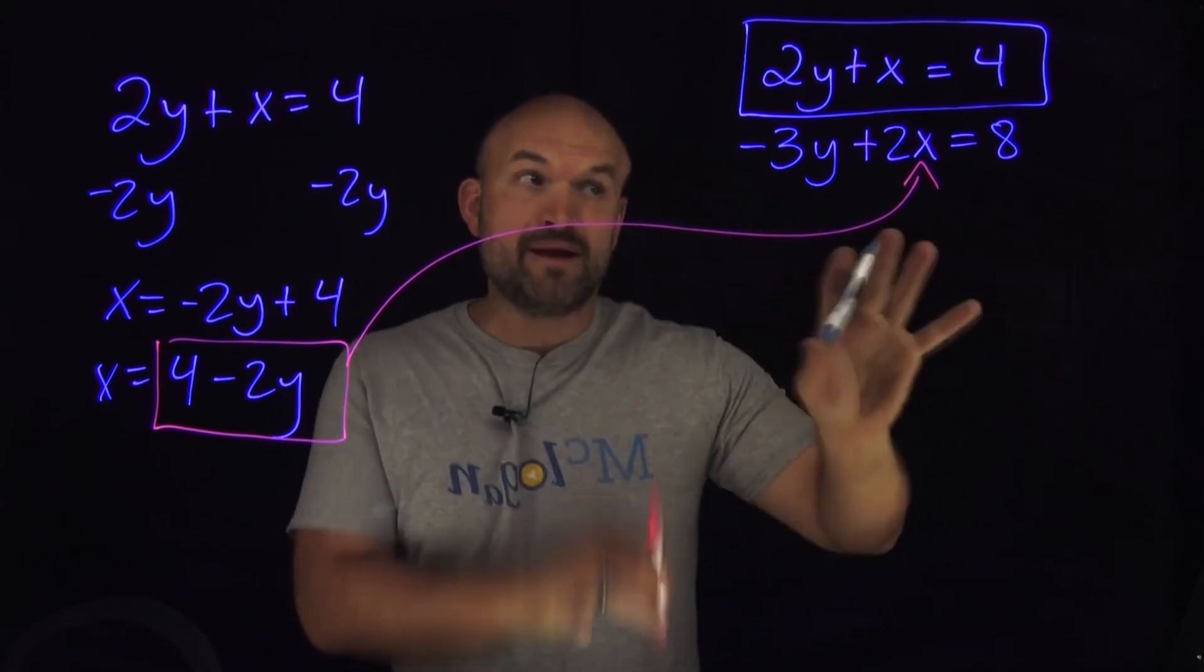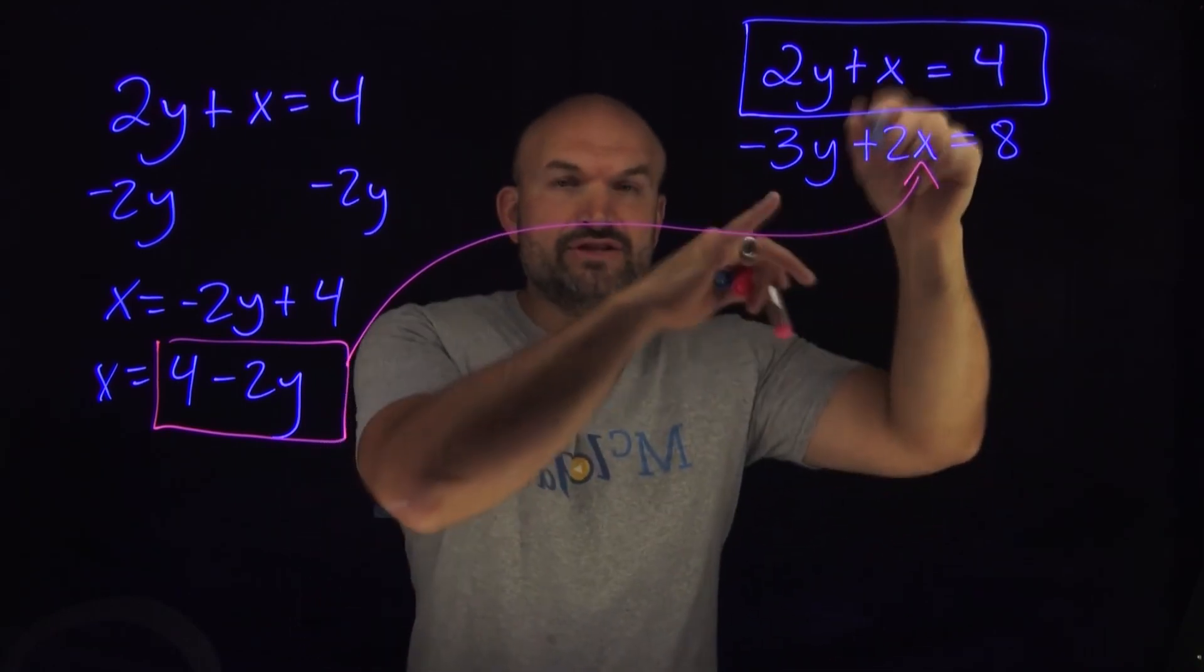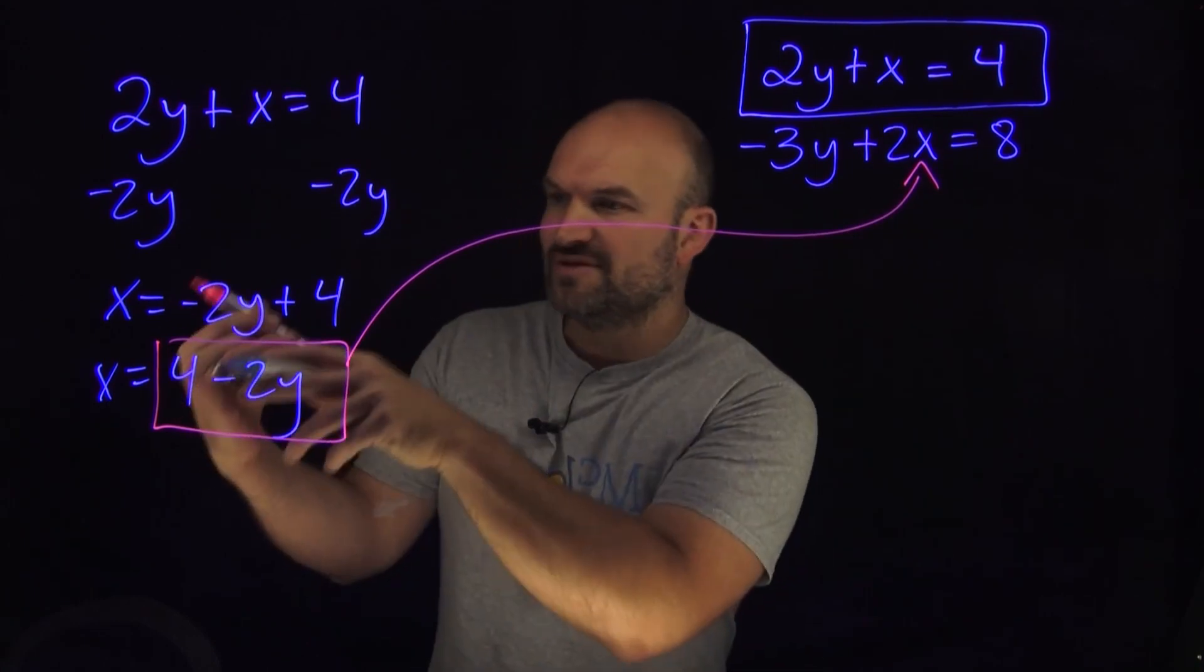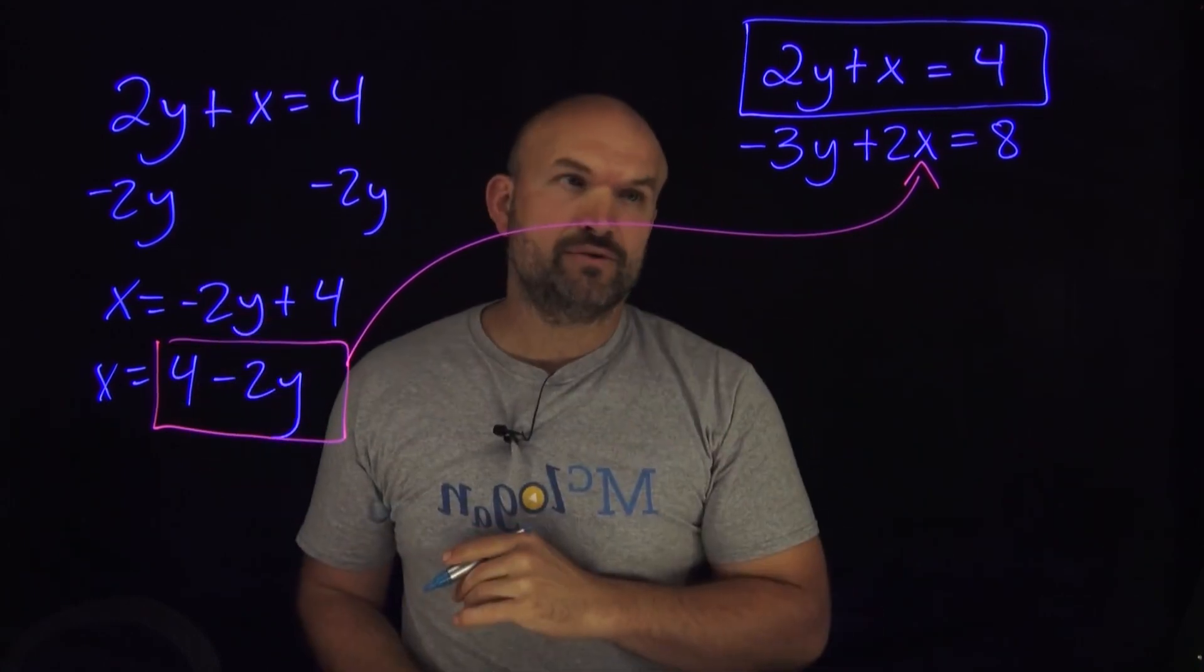So now what I can do is rewrite my bottom equation. Instead of multiplying the 2 times the x, I can multiply the 2 times the 4 minus 2y. So therefore, I can write the equation now like this.